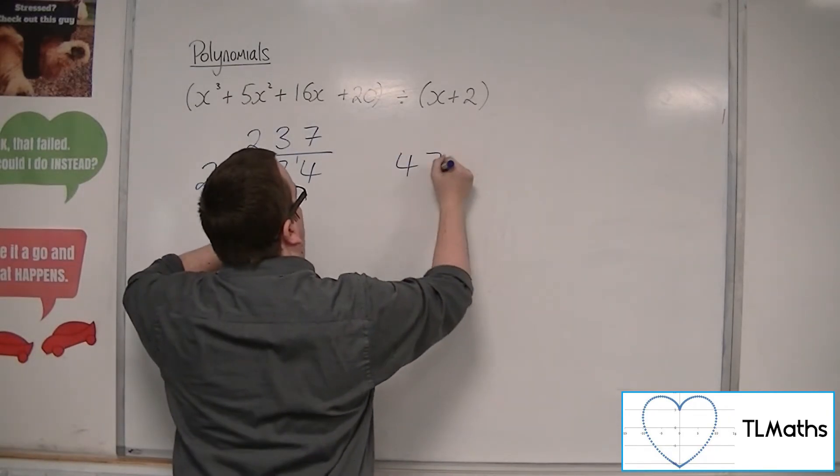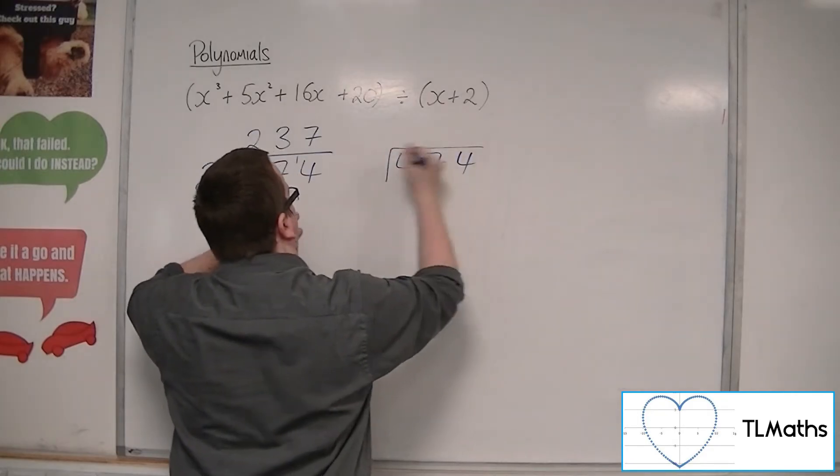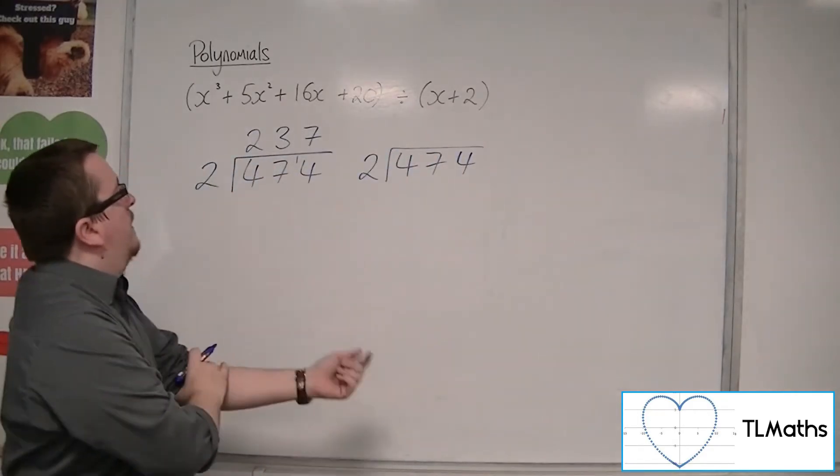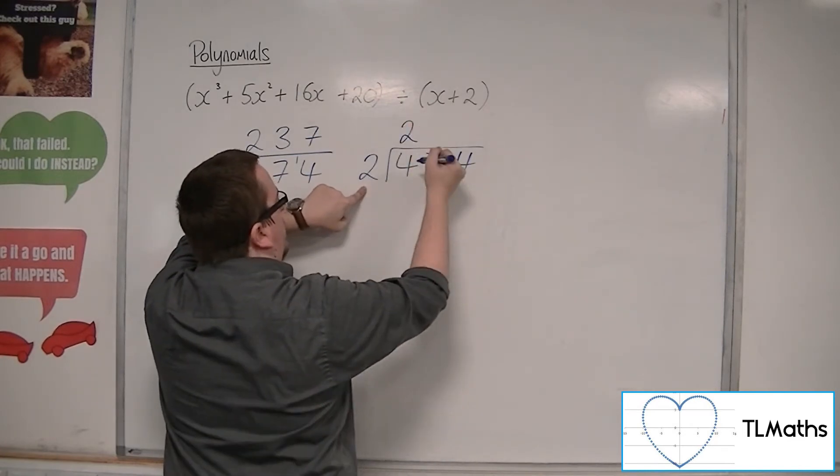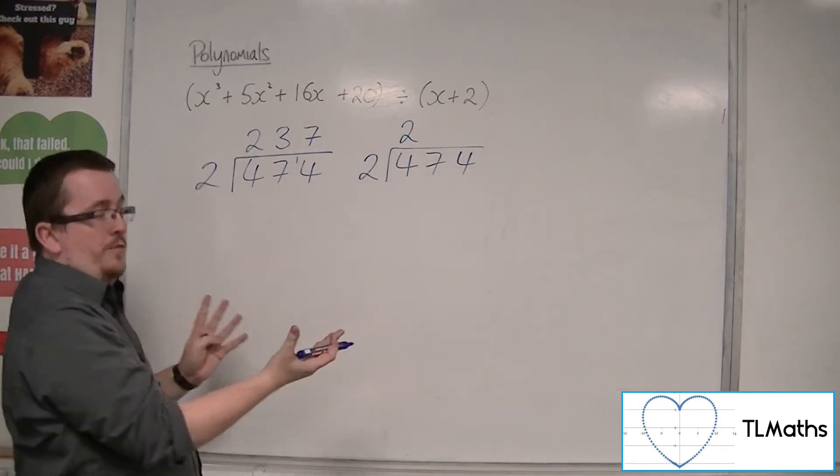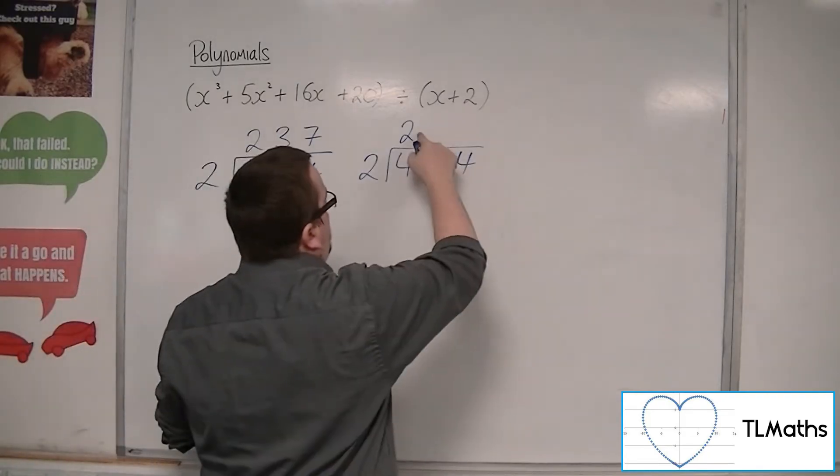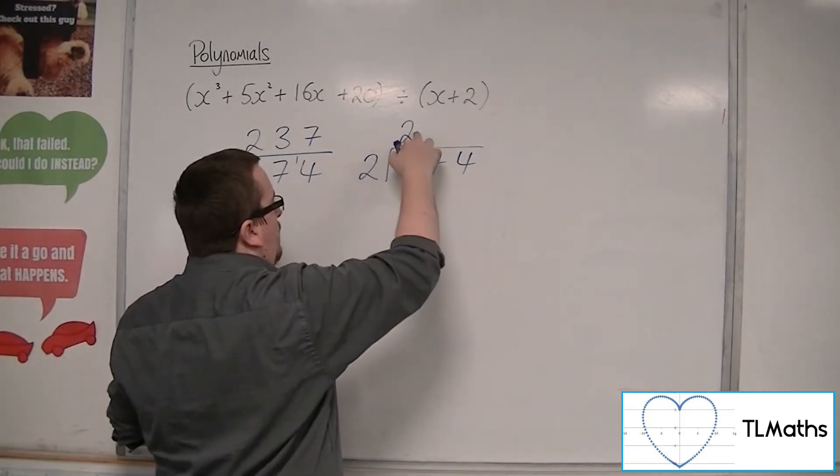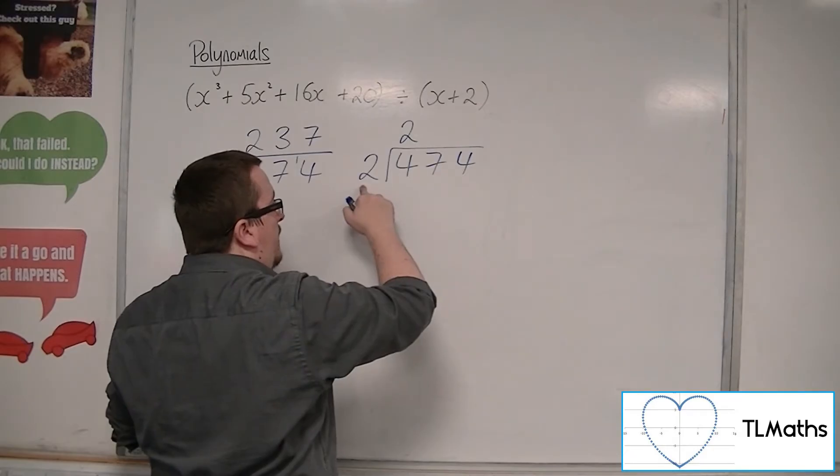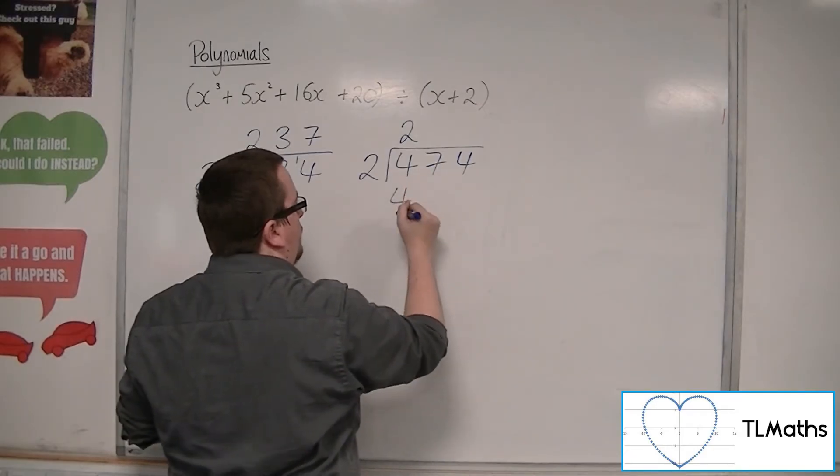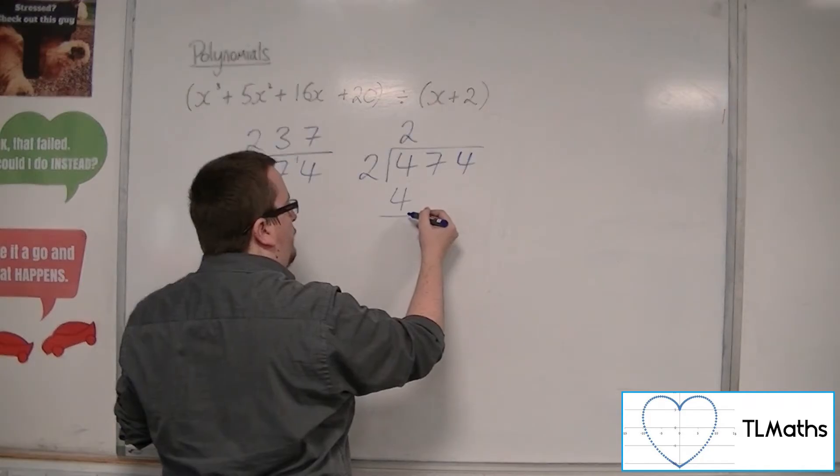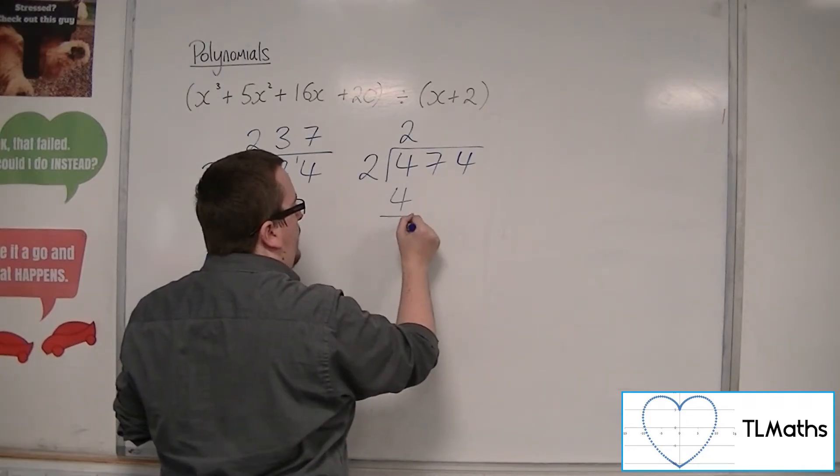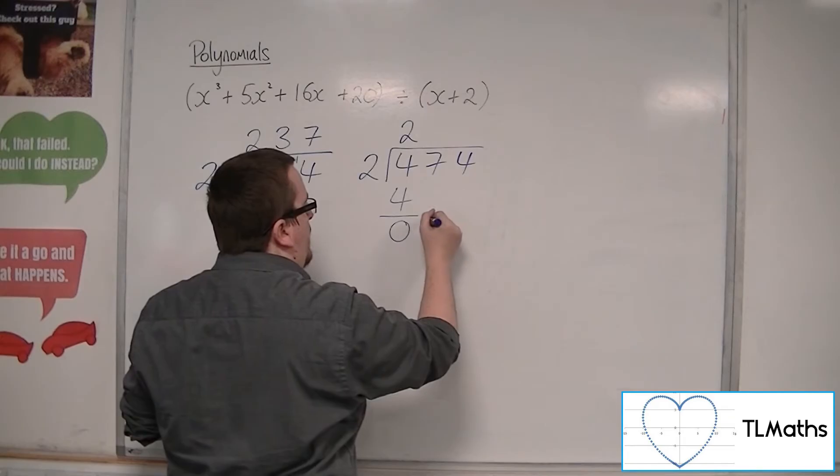If you're going to do it the long division way, this is how it works. You go 2s into 4 go twice, precisely the same as we did in short division. Then you do 2 lots of 2, so you multiply that number by this number and you get 4. You then draw a line and make a subtraction. So 4 take away 4 is 0, and then you bring the 7 down.